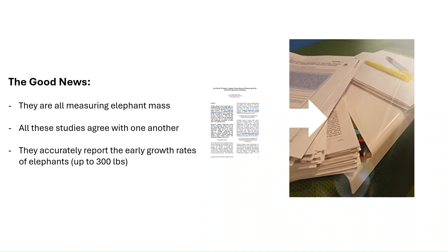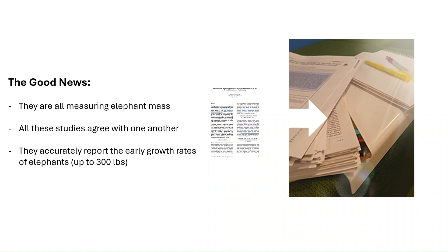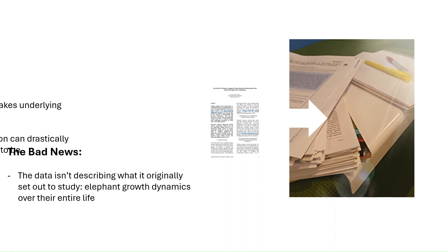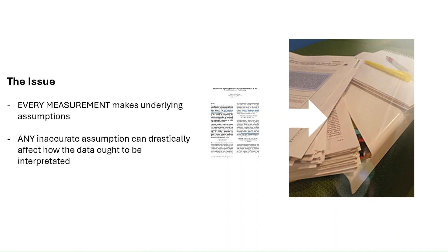Objectively, the growth rates from zero to 300 pounds are outstanding. But the obvious problem is that we're not measuring what we set out to measure — which is the elephant's growth dynamics over their entire life. By assuming the maximum mass would not exceed the scale that was used, the utility of the study has been limited. The data isn't wrong; it's simply only valid from zero to 300 pounds, and that is okay as long as you know this when interpreting the data.